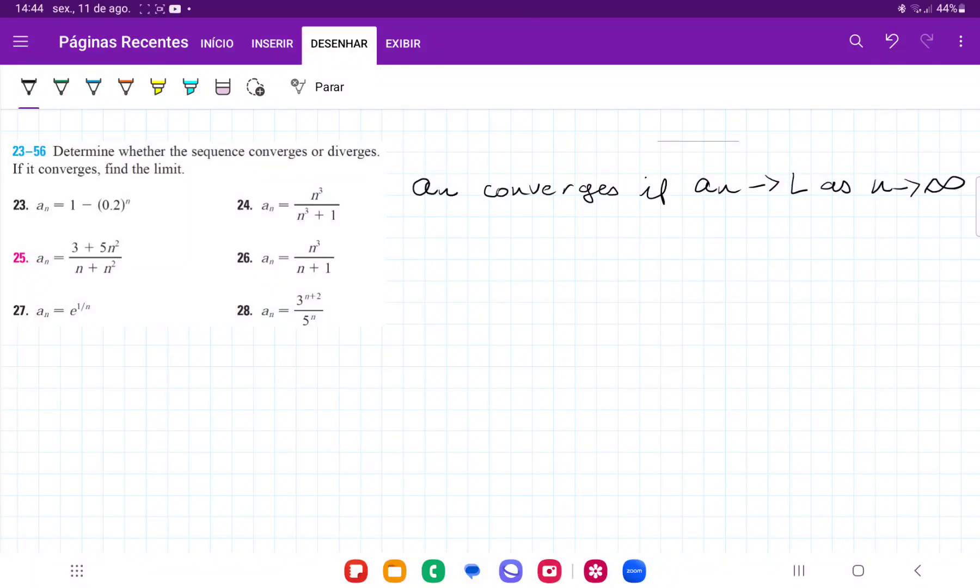So for number 24, we are asked to determine whether the sequence over here, whether it converges or diverges. A sequence converges if it tends to a defined limit as n goes to infinity.